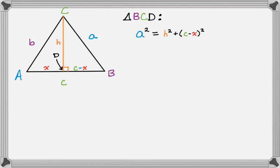I'm going to expand this. So a squared equals h squared plus square the first, multiply them together times 2, and then square the last. So c squared minus 2cx plus x squared. I'm going to box that and save it for later.